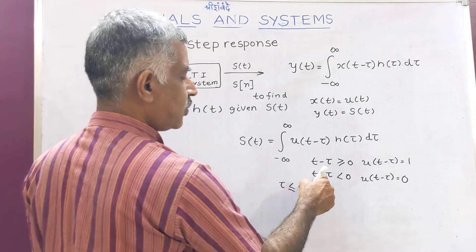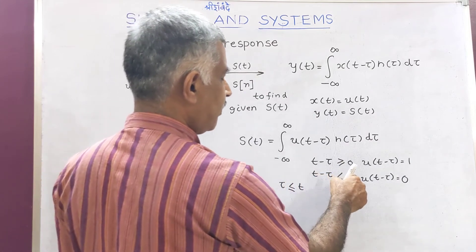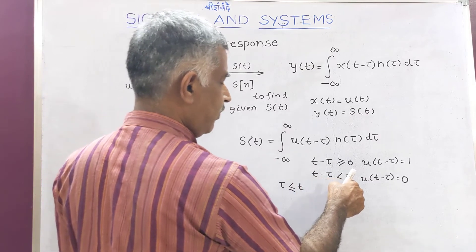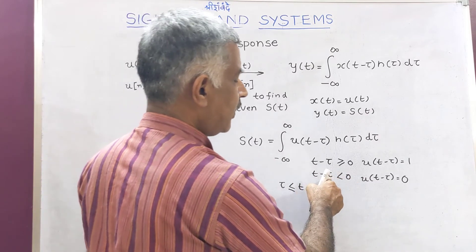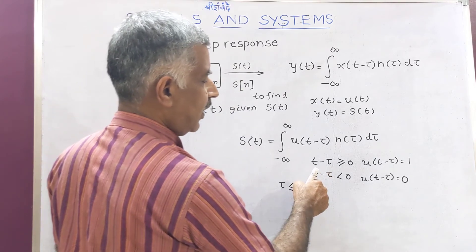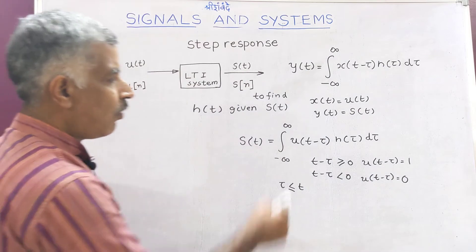When T minus tau is less than zero, this means tau is greater than T. When tau is greater than T, the value of the function is zero.